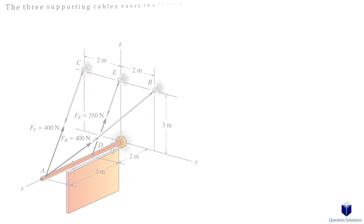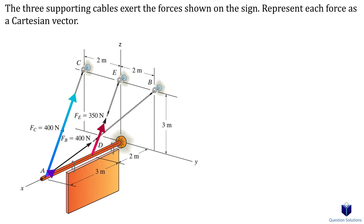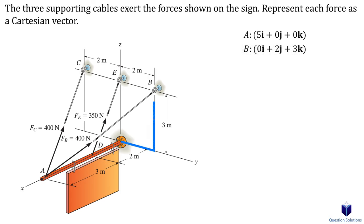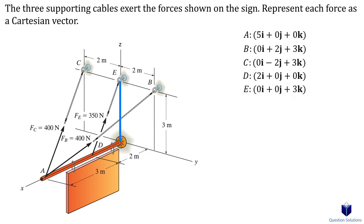Let's take a look at this question where we need to express each force in the ropes in Cartesian form. The first step is to write down the locations of points A, B, C, D, and E. First, point A; next, point B; now point C; point D is next; and lastly we have point E.